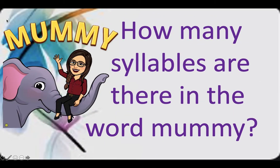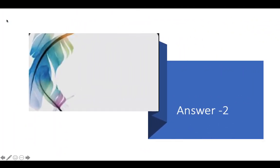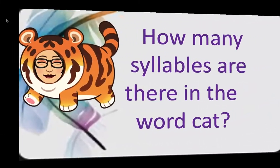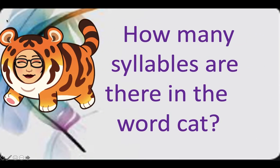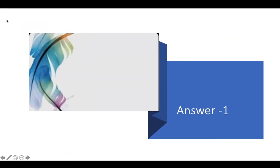How many syllables are there in the word 'mummy'? Well done — two syllables: mum-my. How about 'cat'? There you are — one syllable.